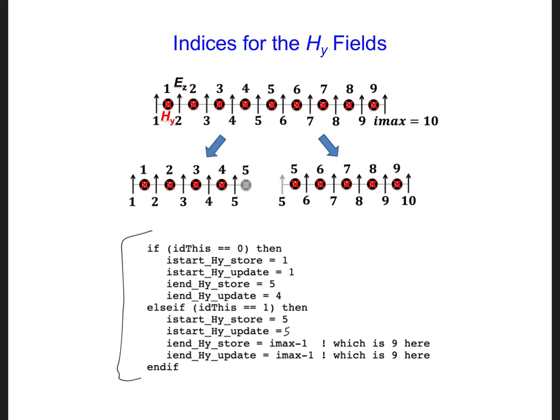This is what I got for the HY indices. Now our one-dimensional FDTD simulation has more than just 10 grid cells that we've considered here. So it's best to generalize this so that it works for any size grid.